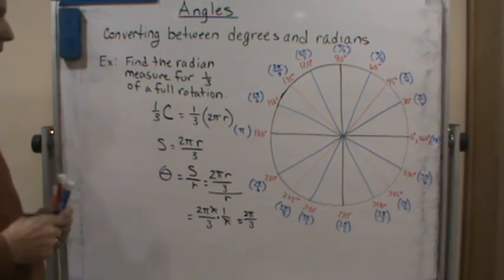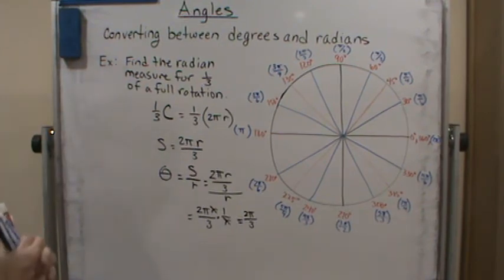And that is the radian measure for one-third of an arc length, or actually one-third of a full revolution.